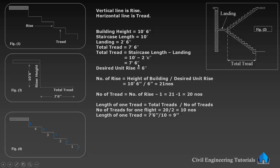This is total tread divided by the number of treads and we are getting 9 inches. So the length of one tread is 9 inches. Tread is 9 inches and rise is 6 inches.